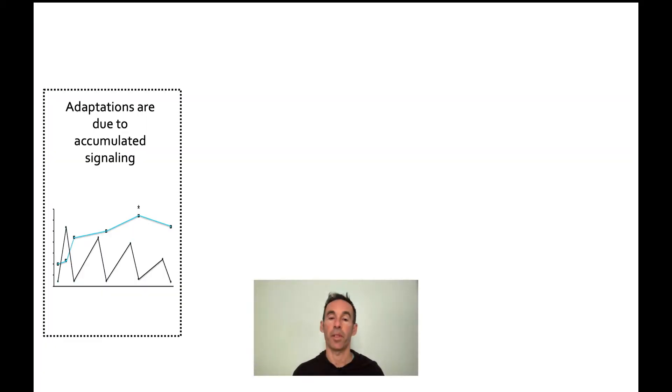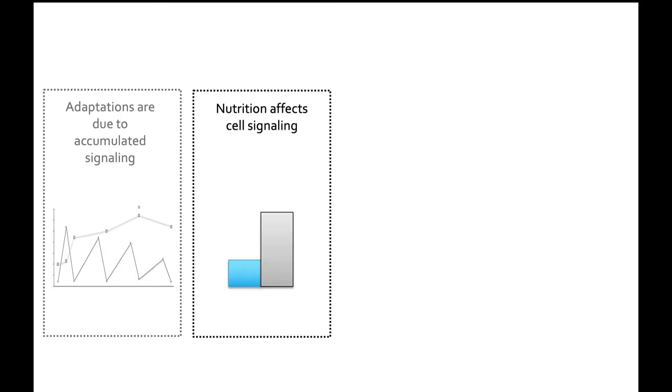To give some brief background on this, we know that adaptations to exercise are the result of accumulated signaling that happens during the exercise session. So exercising once is good, but of course it takes multiple repeated consistent efforts to actually get fitter, faster, or stronger. We also know that what we eat before, during, and after exercise influences that exercise session.